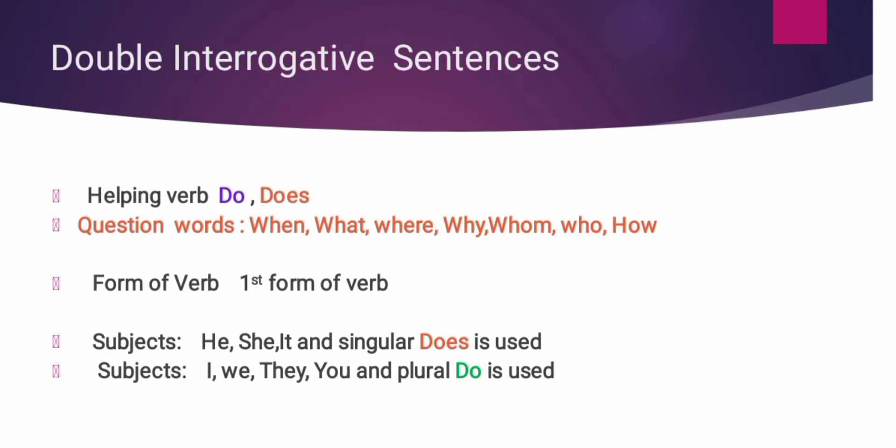अब question words कौन कौन से होते हैं? Just like when, what, where, why, whom, who, how. ये क्या कहलाते हैं? Question words कहलाते हैं. Which form of verb is used? First form of verb is used. तो first form जो verb की है वो इस्तमाल होती है.